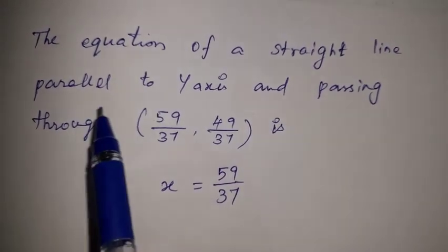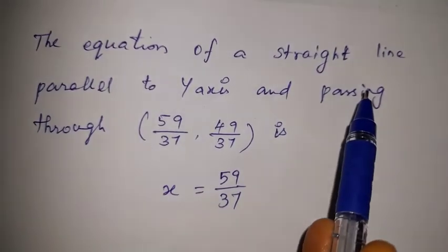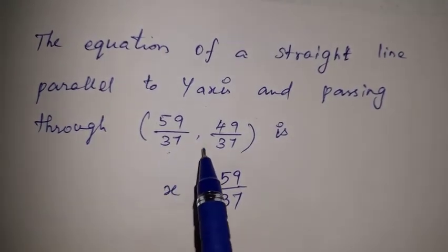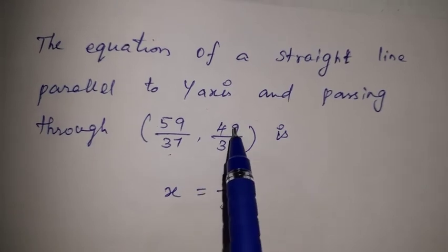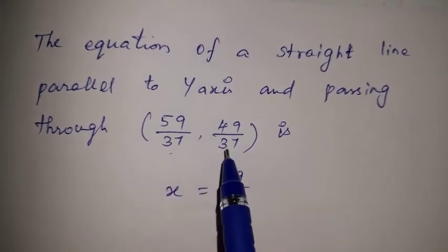The line is parallel to the y-axis and passing through the intersection point, which is 59 by 37, 49 by 37.